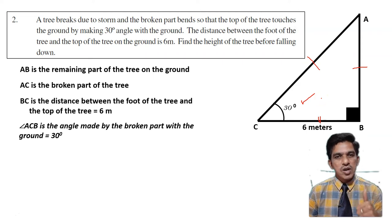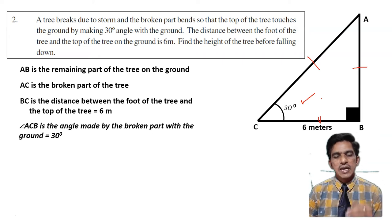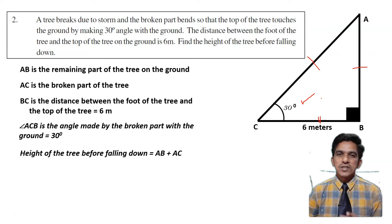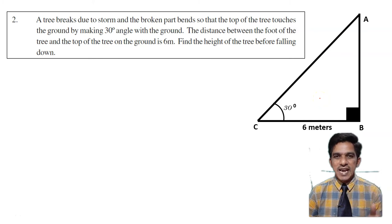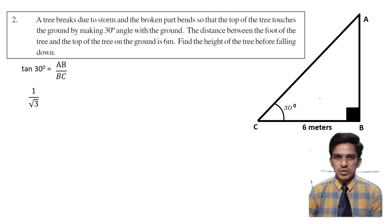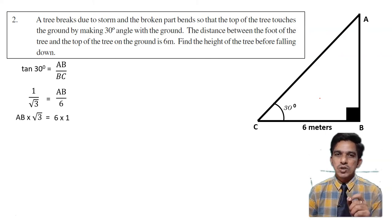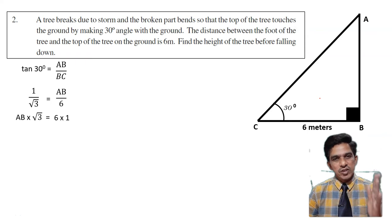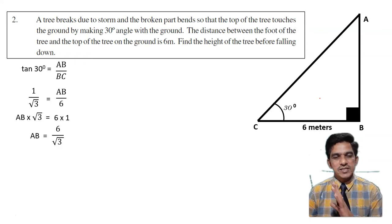To find AB, we use tan since we need opposite from adjacent. Tan 30 is opposite by adjacent, that means AB by BC. We know tan 30 is 1 by root 3. So 1 by root 3 equals AB by 6. Cross multiplication gives AB into root 3 equals 6 into 1. Transposing, AB equals 6 by root 3. We have found one value.